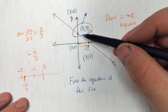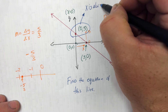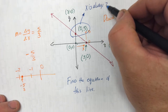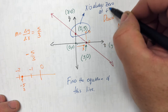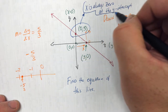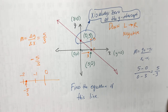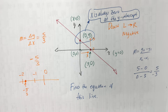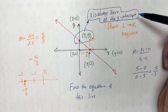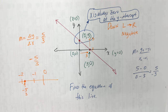This is the y-intercept. X is always zero at the y-intercept — that's a really important fact. It's true for all graphs, not just linear ones. If you have a y-intercept, x is zero. To find a y-intercept, replace x with zero and solve for y.